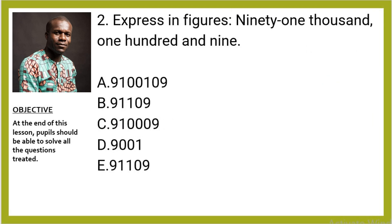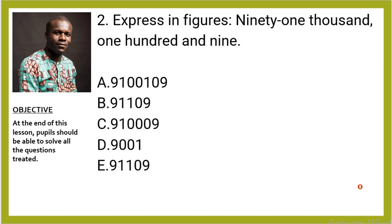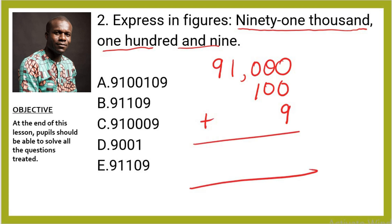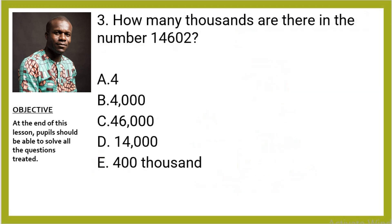Question 2: Express in figures ninety-one thousand, one hundred and nine. Though it appears very easy, I encourage you not to just write your answer straight up — break it down. 91,000 — it has a comma — then we have 100 and we have 9. Add everything up: 91,109. So the right option is E, 91,109.